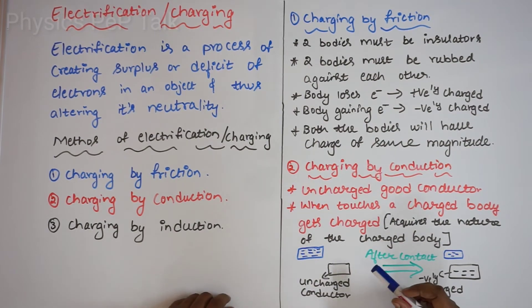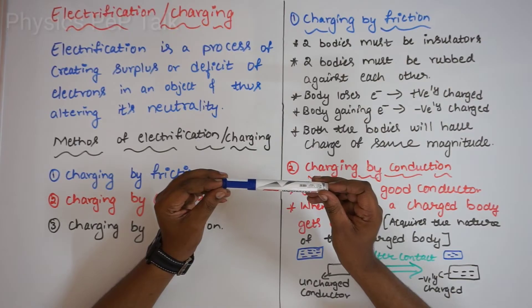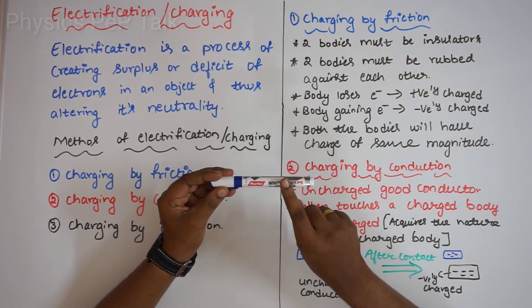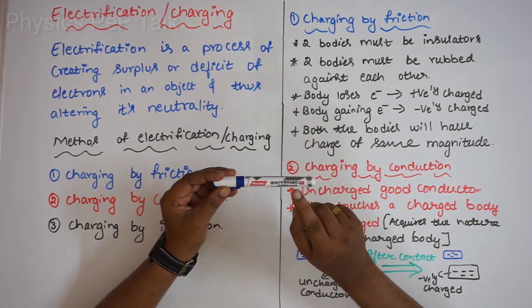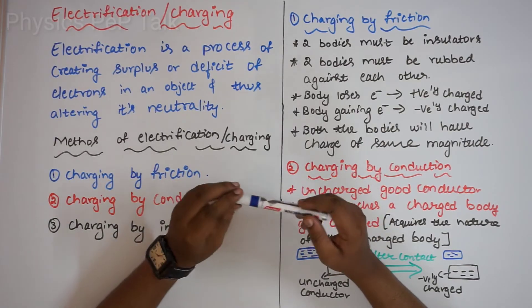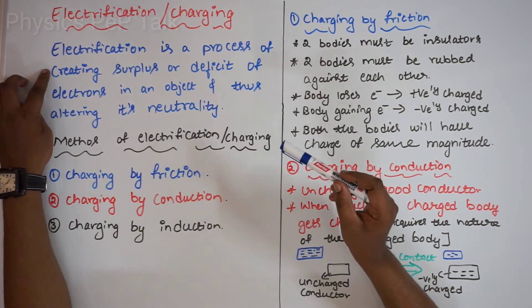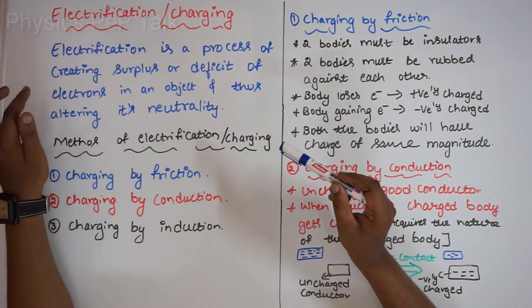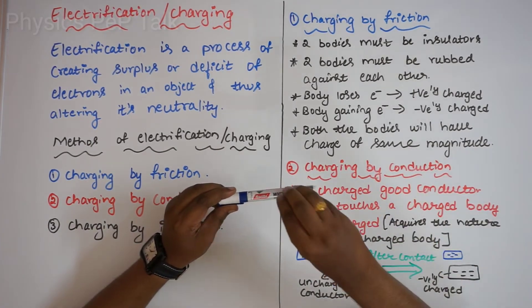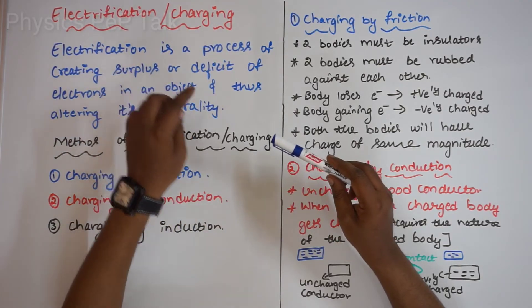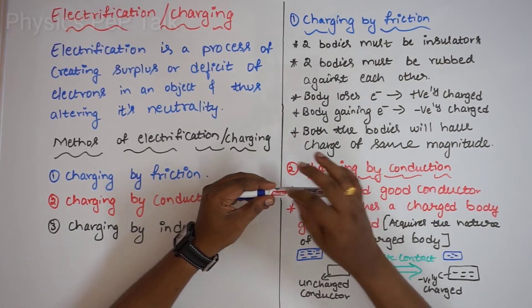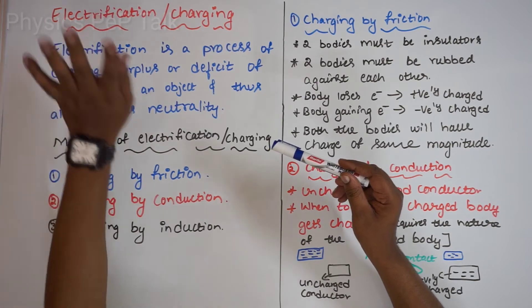Electrification or charging: to charge a body you either add electrons to it or remove electrons from it. If you add electrons, this body becomes negatively charged. If you remove electrons, this body becomes positively charged. The process of making a body either positively or negatively charged is called electrification. The textbook definition: electrification is a process of creating a surplus or deficit of electrons in an object and thus altering its neutrality. Surplus means excess electrons, deficit means removing electrons.